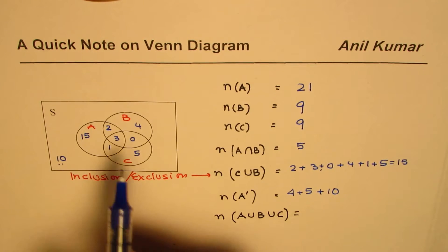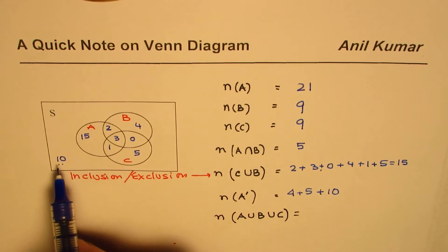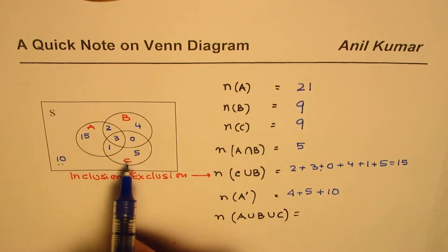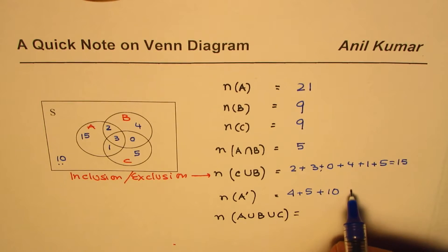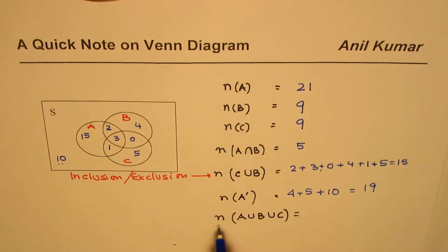I've seen many times students miss out this number 10. This number is very important: all which are outside A, including 10, which is not a part of A, B, or C. So that gives you total number 9 plus 10 as 19.